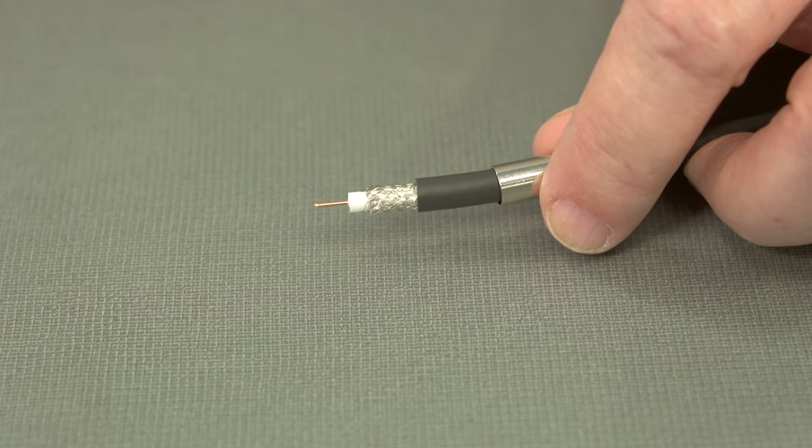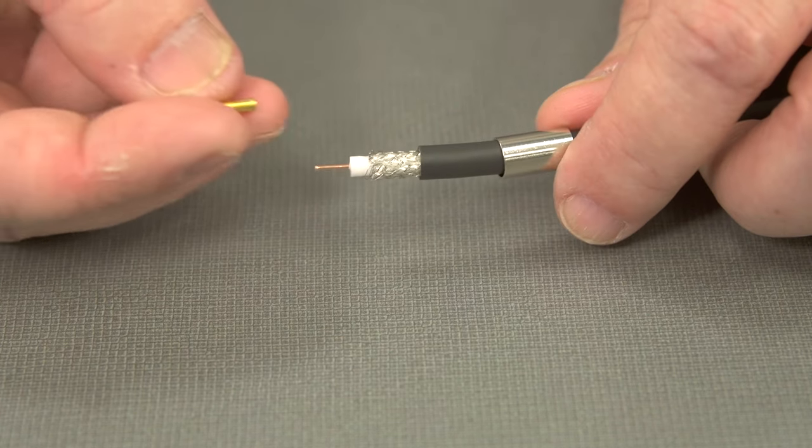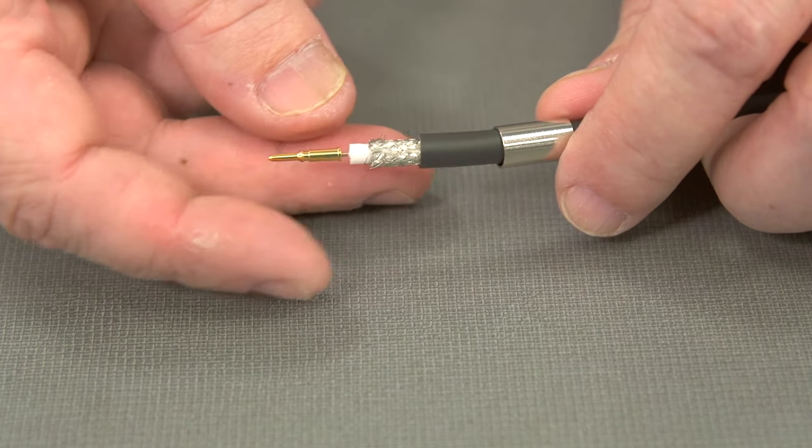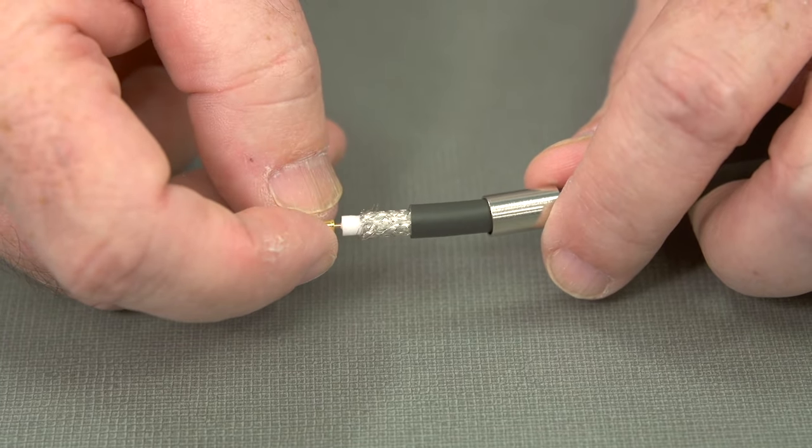As a next step, we'll want to attach our center pin to this center conductor. Let's put it on. We want to make sure that it fits nice and snug.